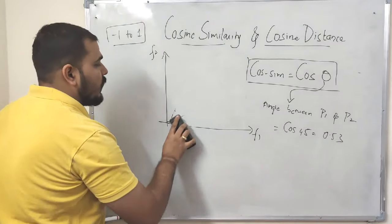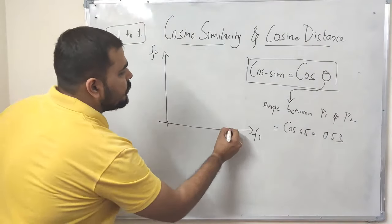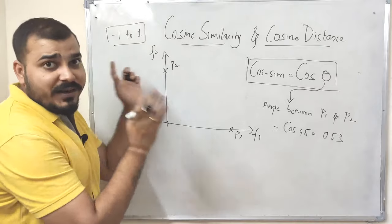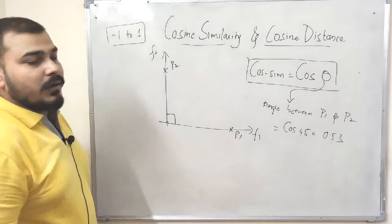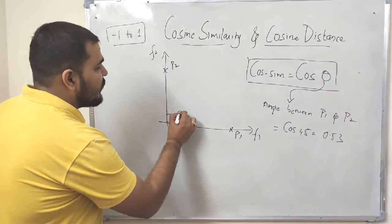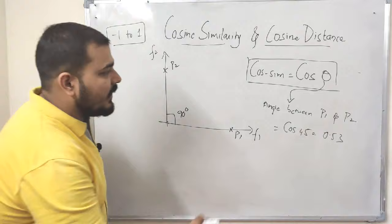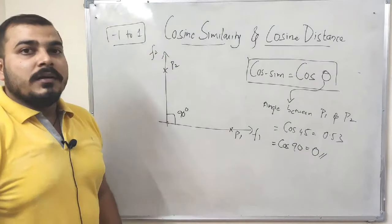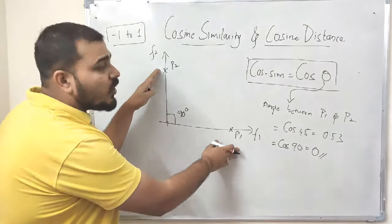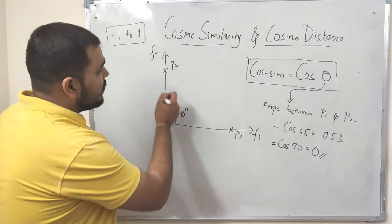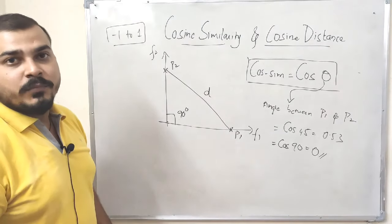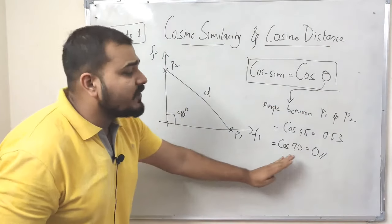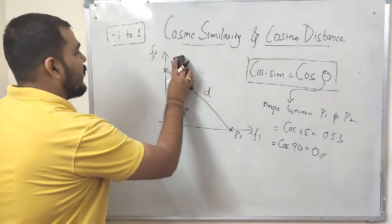Now let me take another example. Suppose P1 is here and P2 is far away, making the angle between them 90 degrees. When I substitute into the formula, cos(90°) equals 0, which indicates these two points are not similar — the distance D between them is also very high.